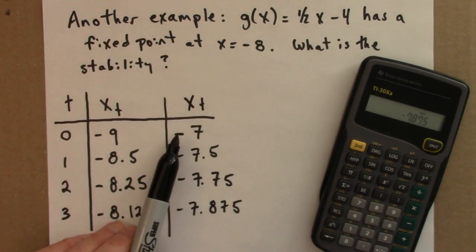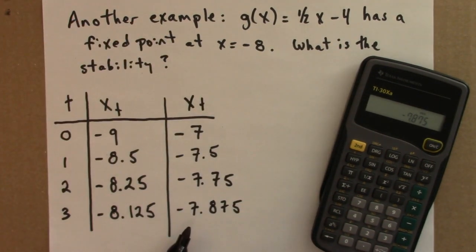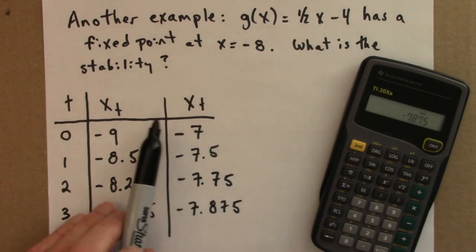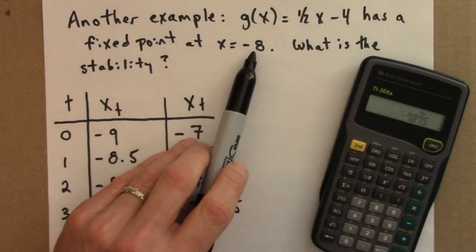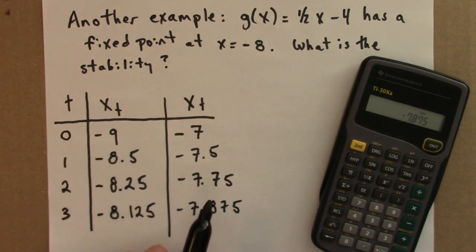You'll see that minus 7 also gets closer to minus 8. So orbits or initial conditions on either side of this fixed point, minus 8, get closer to it.